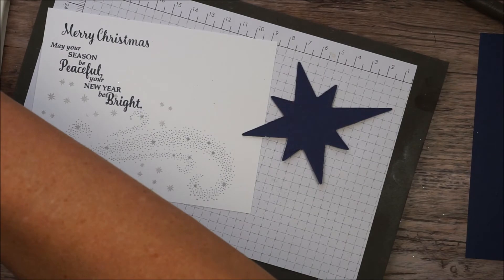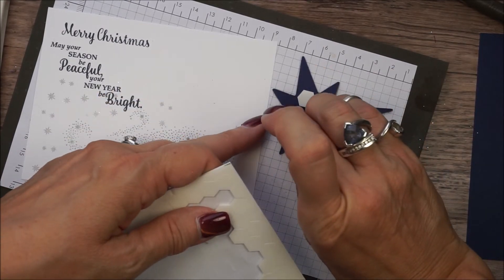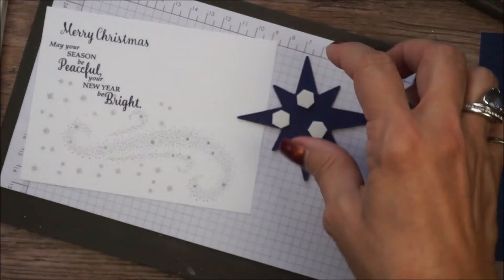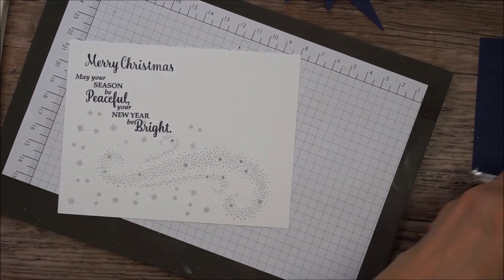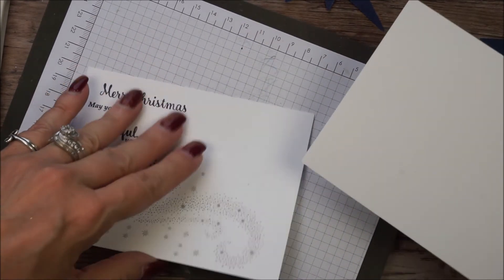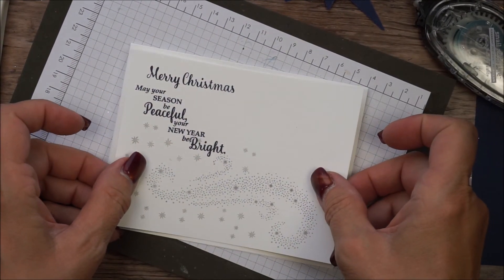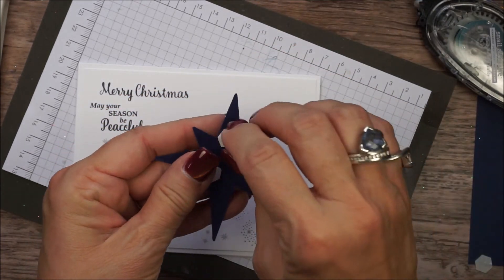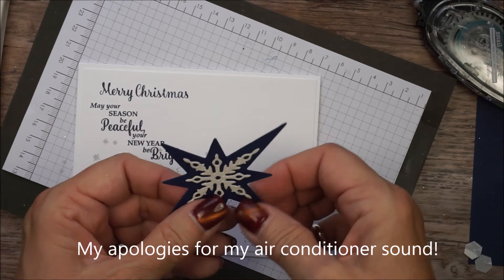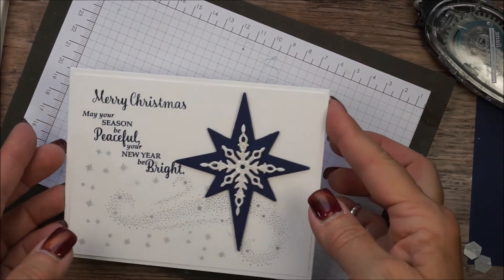And then my cards are not ever complete until I use dimensionals. Okay, before I put my star on, I am going to go ahead and mount my stamped layer. This is just white on white. I mean, it's not anything fancy. It's just to give it a little bit more depth by having the same color background paper. If you wanted to use night of navy, you could. Okay. All right, so now I'm ready for my star. And there you have it.